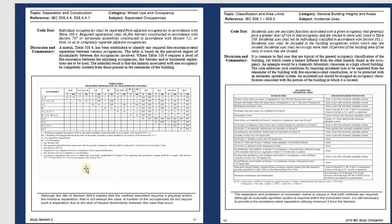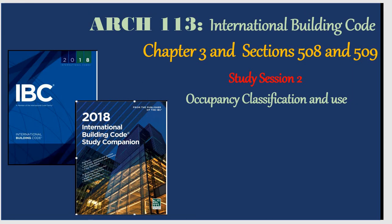There is a table that explains how to use occupancy separation requirements between groups. It shows how many hours of fire separation are required: if the table shows 'N' that means no fire separation is needed; '1' means one hour; '2' means two hours. So this chapter teaches you about the different kinds of groups and how to determine occupancy separation requirements.